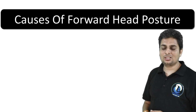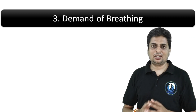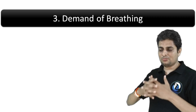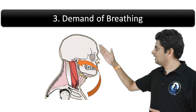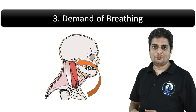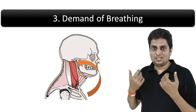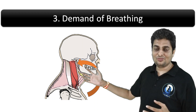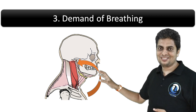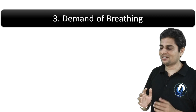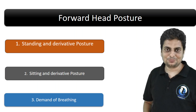The third sitting factor is the demand of being forward — for example, working on a computer at a desk requiring you to lean forward. This demand also increases the forces bringing the head forward. The third overall category is the demand of breathing: any diaphragmatic or breathing dysfunction that restricts the diaphragm from descending effectively will lead to shortness of breath, activating accessory muscles such as the sternocleidomastoid, pectorals, and trapezius — resulting again in forward head posture.